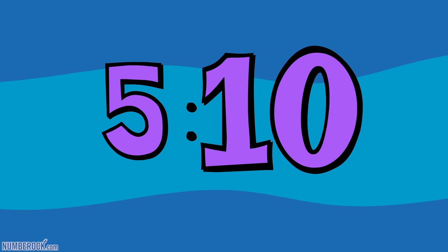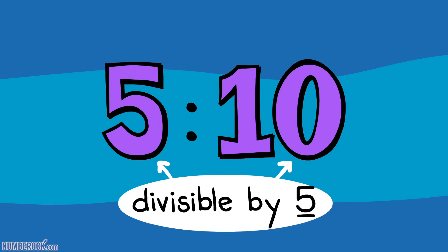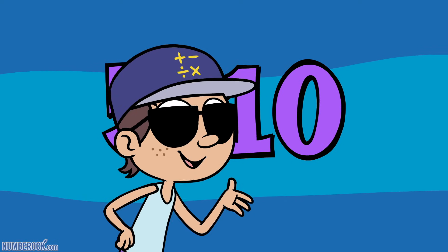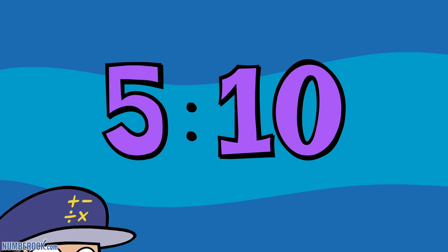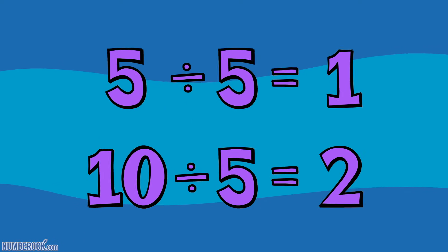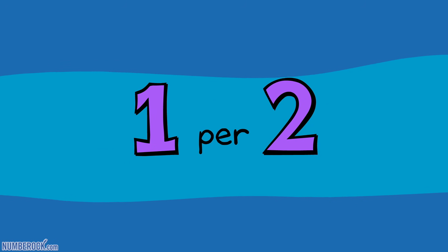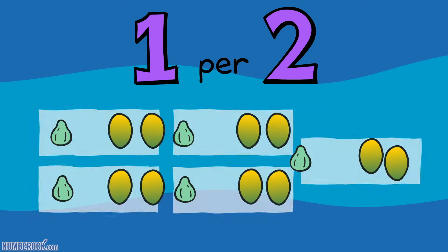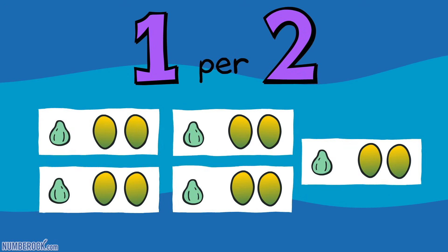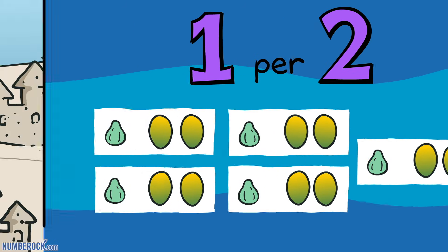Five and ten are divisible by five, it's true. So here's one last step we can do: with division simplified, a one to two on the playa. Because for every one guava, there are two papayas.